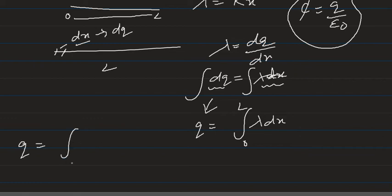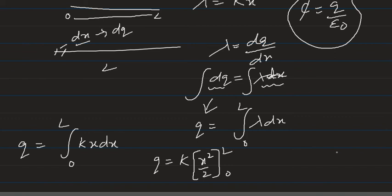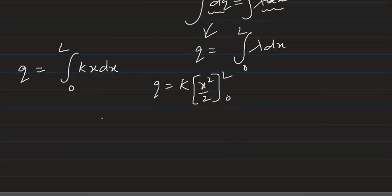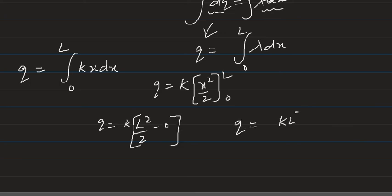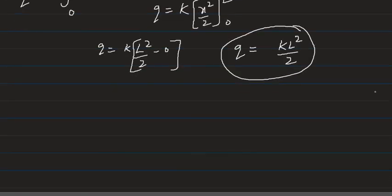So Q equals the integral from zero to capital L of kx dx. Since k is a constant, the integration of x dx gives x squared by 2, evaluated from zero to capital L. Putting in the limits: the upper limit gives kL squared upon 2, and the lower limit gives zero. Therefore Q is equal to kL squared upon 2, which is the total charge on the wire of length L.